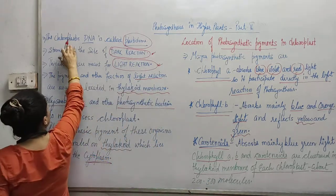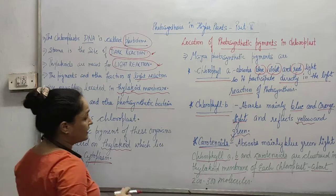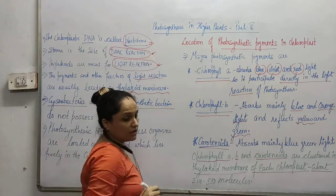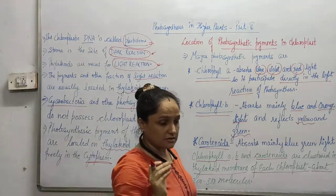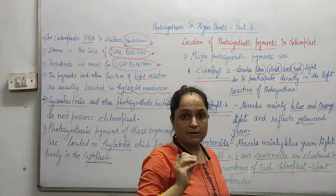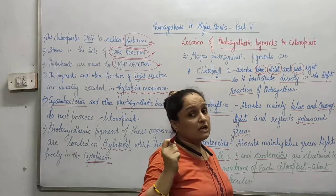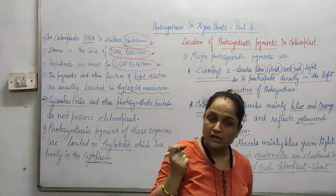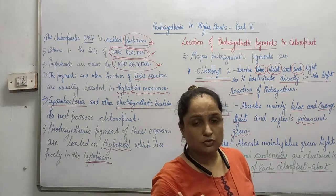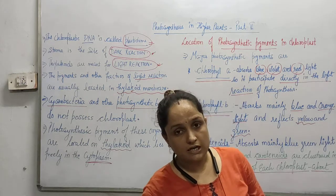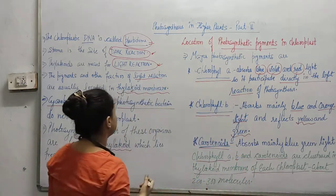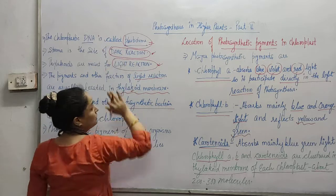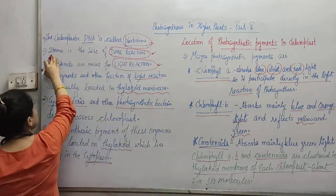The chloroplastic DNA is known as Plastidome. Why Plastidome? Because it is basically the part of the Plastid. Plastid means color-providing agent, so chloroplast is a color-providing agent — it provides the green color. That is the reason it is known as a Plastid, and its DNA will be known as Plastidome.